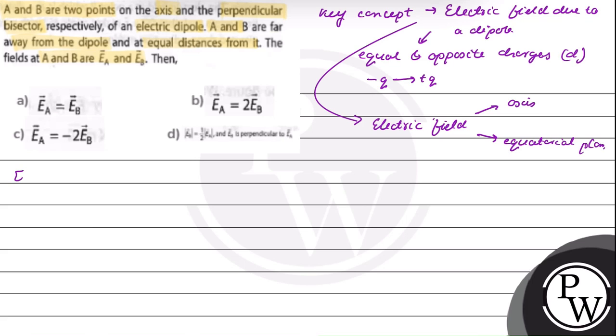On the axis of the dipole, the electric field vector is given by 1 by 4 pi epsilon 0, 2p vector r upon r square minus a square, the whole square.